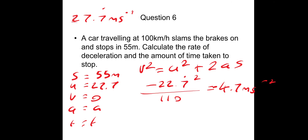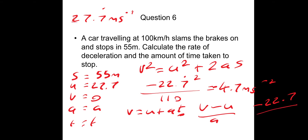Now finding time using V equals U plus AT, rearranged to T equals V minus U divided by A. That's zero minus 27.7 recurring, divided by the acceleration of minus 4.7 (using the full value of minus 4.6844 for accuracy). Putting that in your calculator gives 4.8 seconds. The rounded and full values both give 4.8, so that's fine.